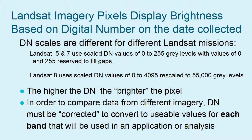Landsat imagery pixels display brightness based on a digital number on the date that it's collected. Digital numbers are scaled to different values for the different Landsat missions. Landsat 5 and 7 use values from 0 to 255. Landsat 8 uses digital number values from 0 to 4095, and they're rescaled to 55,000 gray levels. The brighter the pixel, the higher the digital number.